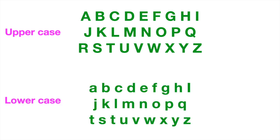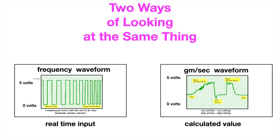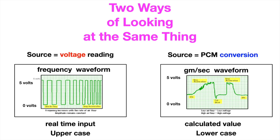It's kind of like reading the alphabet. If the alphabet were in uppercase it would look one way, but if it were in lowercase it would look different — yet they say the same thing. So it's two ways of looking at the same thing. On the left, a frequency waveform is the real-time input, and on the right the grams per second waveform is a calculated value. The real-time input is like looking at uppercase, and the calculated value is like looking at lowercase. The source of the frequency waveform is the actual voltage reading; the source of the grams per second waveform is a PCM conversion.